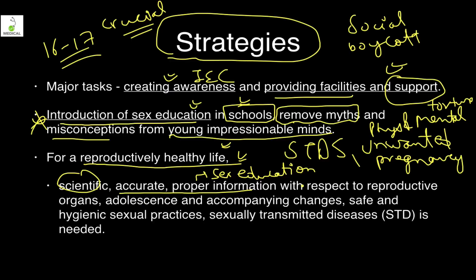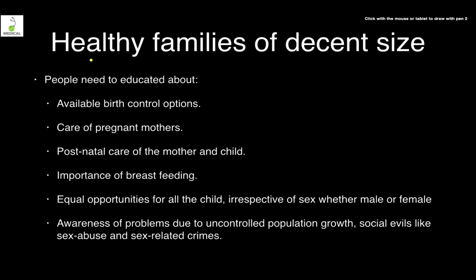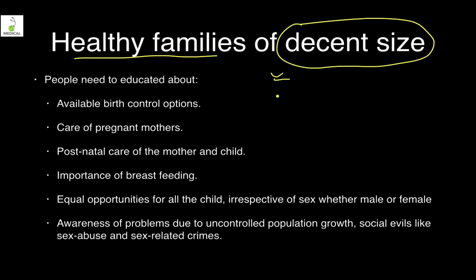Information is needed regarding reproductive organs, adolescence and accompanying changes — including primary and secondary sexual changes — as well as safe and hygienic sexual practices, how to use protection against STDs and unwanted pregnancies. Healthy families of decent size — two parents plus one to two children — is the goal. People need to be educated about available birth control options.